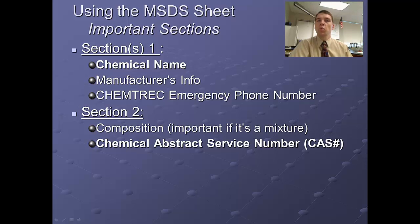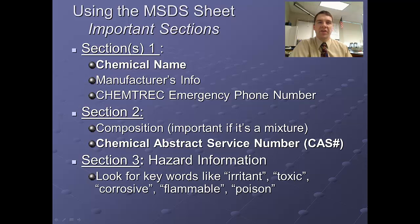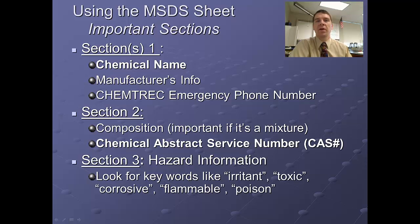For a mixture, section two will tell you all the individual ingredients plus their proportion — their percentage composition. The third section is important because it clues you in on what hazards to watch out for. MSDS sheets are fairly concise documents, usually no more than two pages, so they squeeze a lot of information into a very small space using key words.